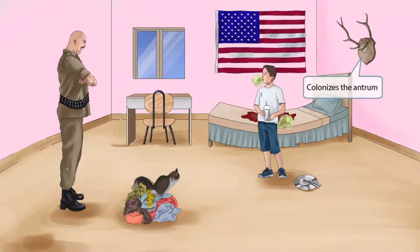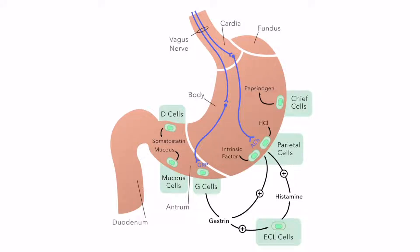We've added antlers to the wall as another decoration. Antlers sounds like antrum, so we've shown it here to help you remember that H. pylori colonizes the antrum. This is the bottom portion of the stomach, as shown in our anatomy and physiology videos.